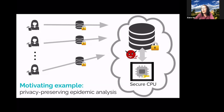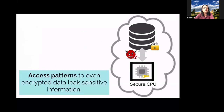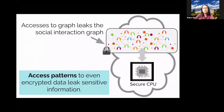This may seem secure, but it may not be. The problem is that access patterns to even encrypted data can leak very sensitive information. By access patterns I mean the sequence of memory addresses accessed by the program. For our motivating example — finding who has been in proximity with an infected person — the algorithm visits the vertex representing the infected person, then visits neighbors and their neighbors. The access pattern of the program can actually leak the entire graph structure.